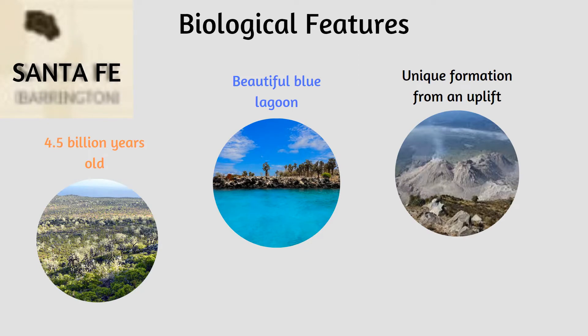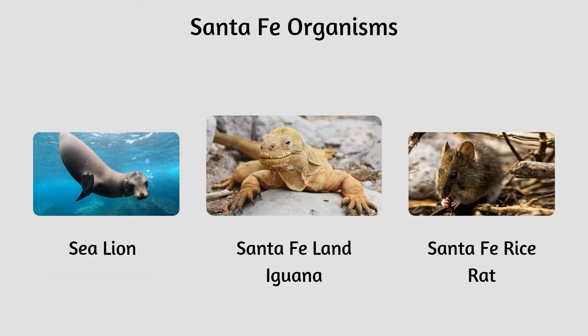Santa Fe is the oldest island in the Galapagos, roughly 4.5 million years old. The island was the aftermath of an uplifting of a layer. This island is unpopulated and it's the perfect place to wind down. The island of Santa Fe has a very rare formation and a beautiful turquoise lagoon. The island's animals are endemic due to its nature and age. Some of these animals include the sea lion, Santa Fe rice rat, and the Santa Fe land iguana.